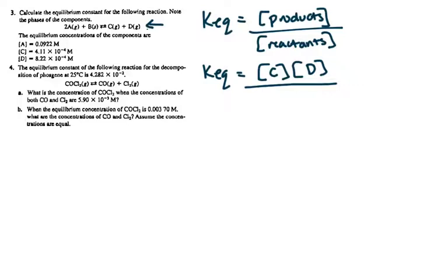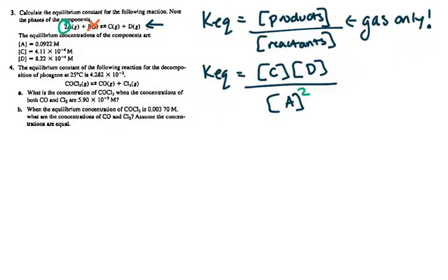Here are two things to remember when writing the expression. First, the expression is for gas only. So anything that's solid, liquid, or aqueous will not be included — only gas. That means we won't be including B because B is solid. We are going to include A, and because A has a coefficient of 2, we're going to square the concentration of A. C and D didn't have coefficients — it was just 1 — so that's technically putting each of those to the power of 1, which is itself.